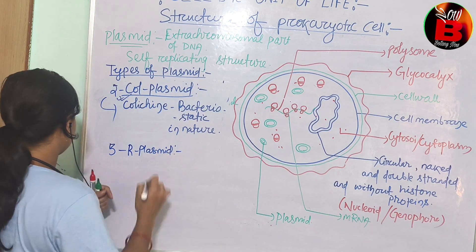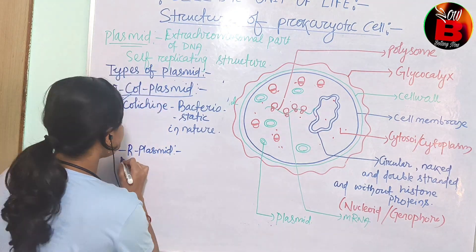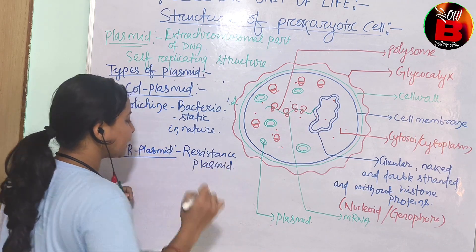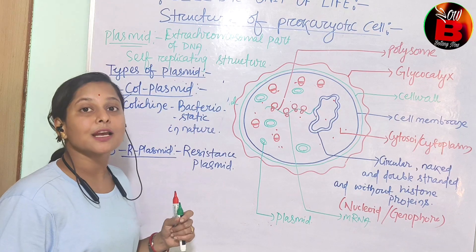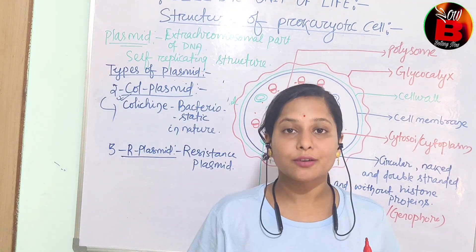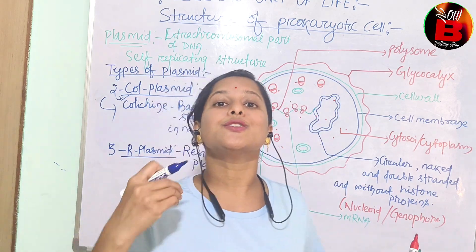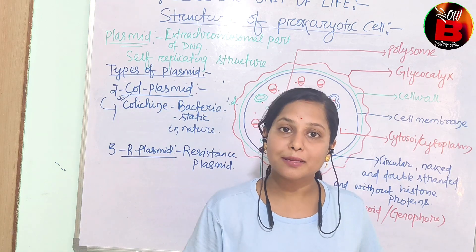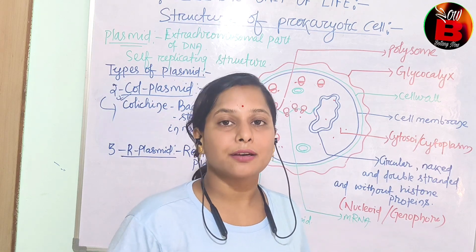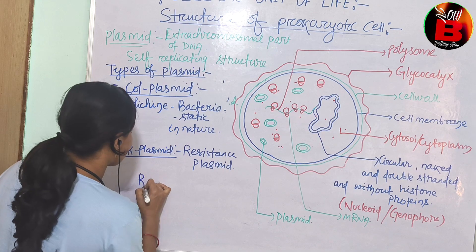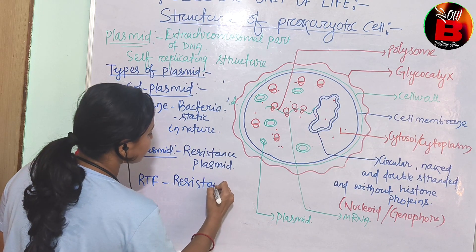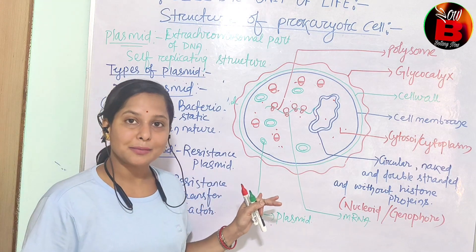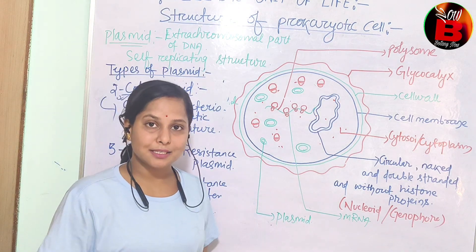The third type is the R-plasmid, which refers to the resistance plasmid. The function of the resistance plasmid is to make the bacterium antibiotic resistant. When the bacterium is treated with antibiotics, it is difficult to kill because it has the capacity to resist the antibiotic environment. It is also known as RTF — resistance transfer factor.